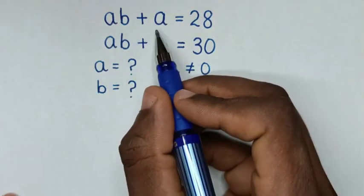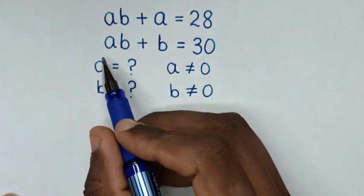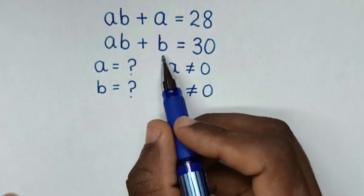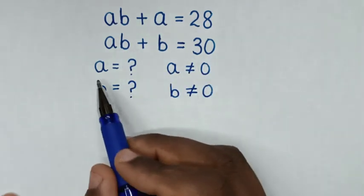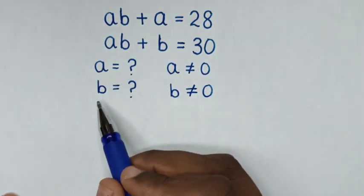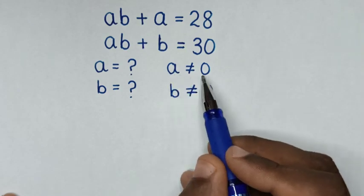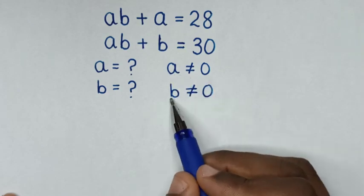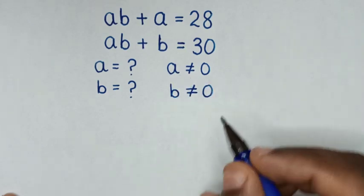How to solve AB plus A is equal to 28, and AB plus B is equal to 30, to find the value of A and B, such that A is not equal to 0 and B is not equal to 0.